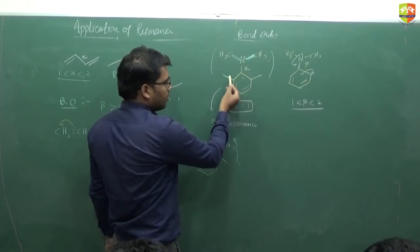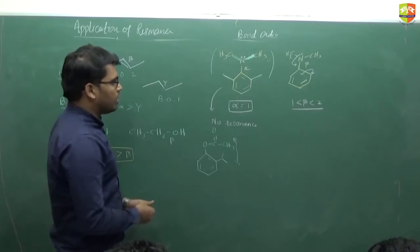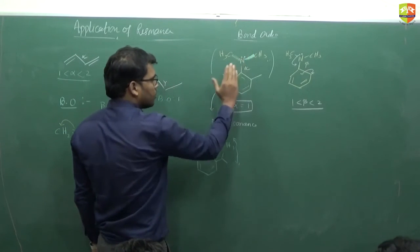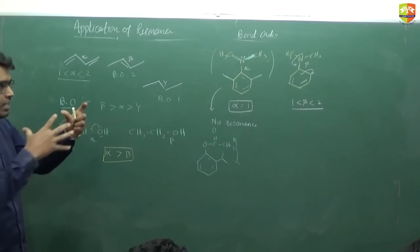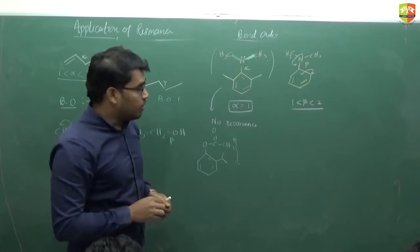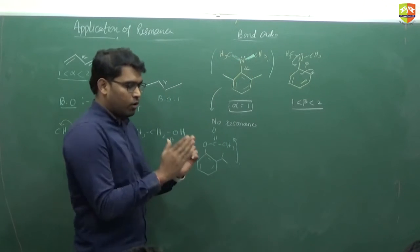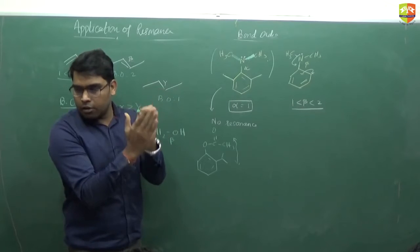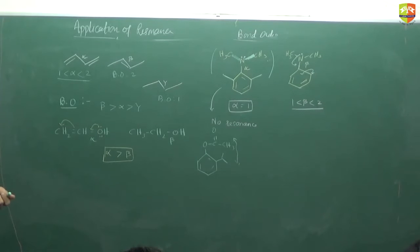In ortho position if any bulky group is present and the other bulky group is also present, there will be steric repulsion, and to minimize this repulsion the molecule changes its plane — it adjusts so that repulsion is minimized. So the orbitals are no longer parallel, meaning no resonance is possible. Steric crowding, steric repulsion, and steric hindrance are all the same thing.